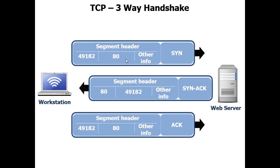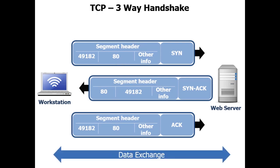Once our three-way handshake is established, we can then and only then exchange data. One of the things we're going to be looking for when we're troubleshooting with Wireshark is, if we're having network problems, to see if the three-way handshake is completing. Because if the three-way handshake can't complete, we can't pass data.